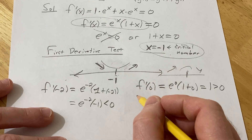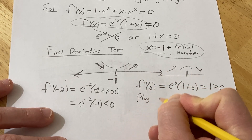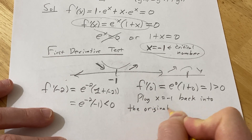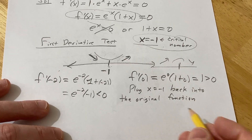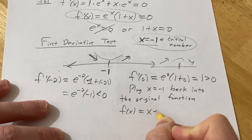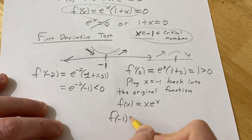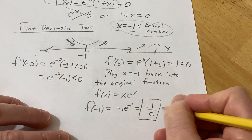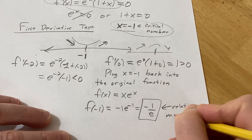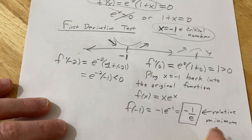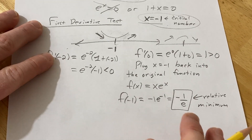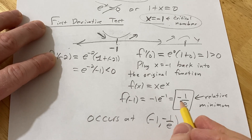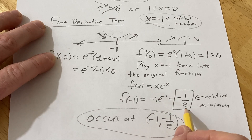Now we'll actually find the value of that relative minimum. To find the value, we take x = -1 and plug it back into the original function f(x) = x times e to the x. Plugging in negative one, we get negative one times e to the negative one, which is negative one over e. So the relative minimum value is negative one over e, occurring at the ordered pair (-1, -1/e).